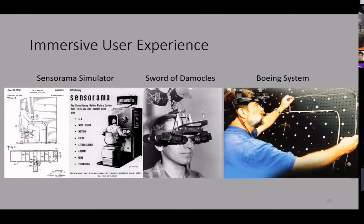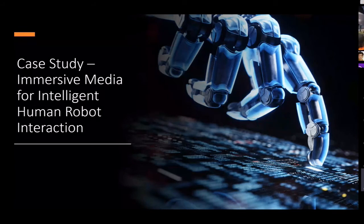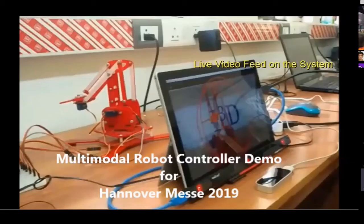Now I'm going to present our own research as a case study on immersive media for intelligent human-robot interaction. In our lab, around summer 2019 onward, we started working on developing a human-robot interactive system with immersive media. The first example we developed used a DIY robotic kit and a video see-through interface. The DIY robotic kit costs as low as 2000 rupees or around $20, and a tablet displayed the view from the back camera on the screen.